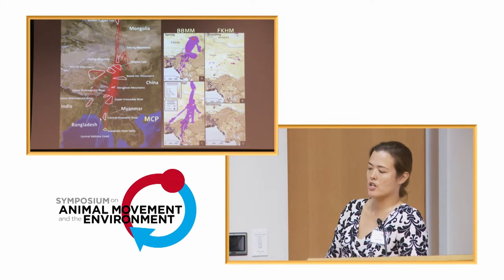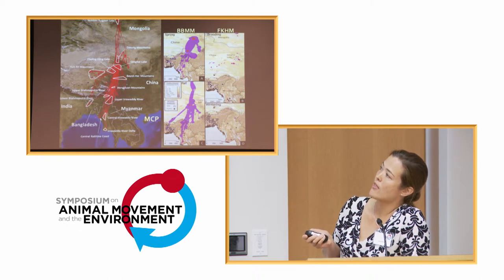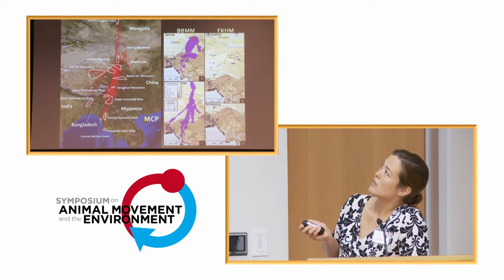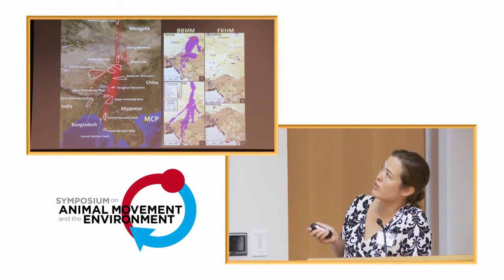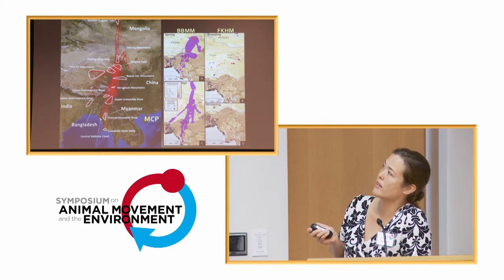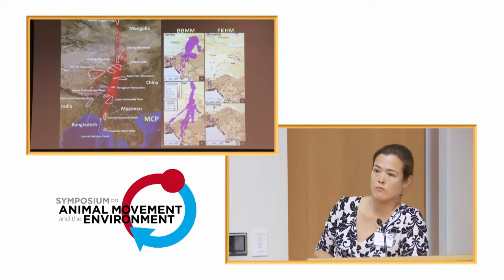Here we're looking at ruddy shell ducks marked at Qinghai Lake, using MCPs. Here's the breeding ground and some stopover areas. Their wintering locations were Bangladesh, Myanmar, and western China. On the right side you're seeing fixed kernel home range breeding grounds and wintering grounds - if you zoomed in, you would see these kernels being pretty tightly overlaid with outbreaks in poultry mainly in the southern part of the flyway. And here are the migration corridors using the Brownian bridge movement models.